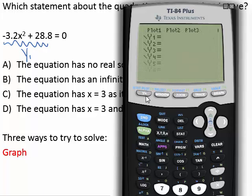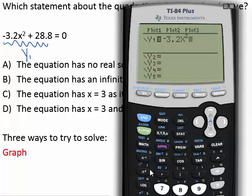So you type your y equals button. And we're going to type in negative 3.2 x to the second power. Plus 28.8. And press enter.